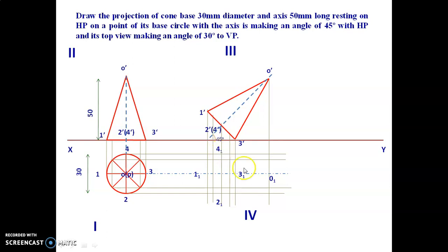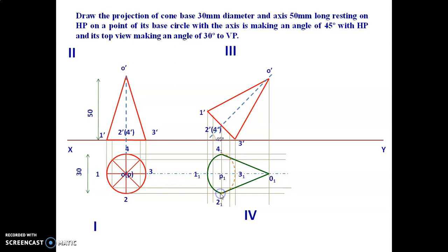From the completed view, we can see certain lines are visible and should be drawn as dark lines. Lines on the far side, such as on sections 4-3 and 1-4-3-2, cannot be seen and should be drawn as dotted lines.